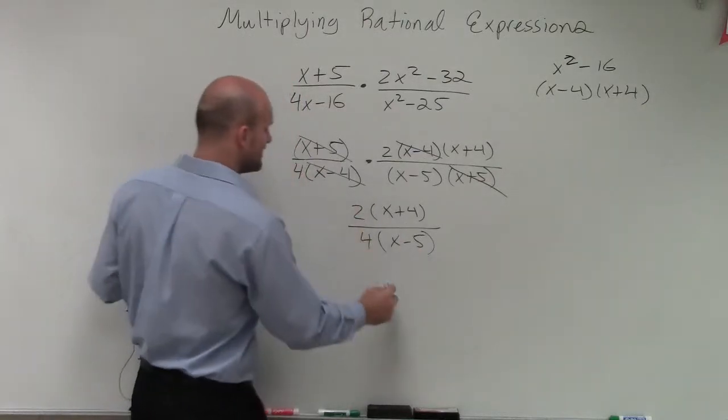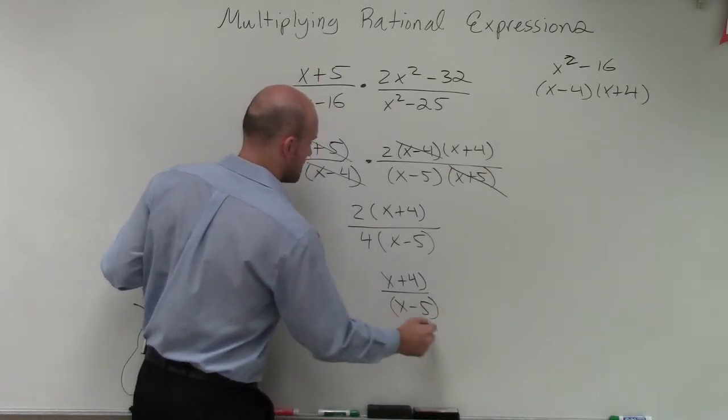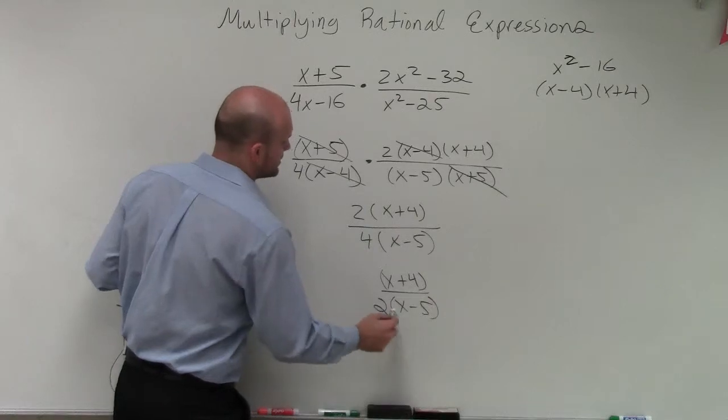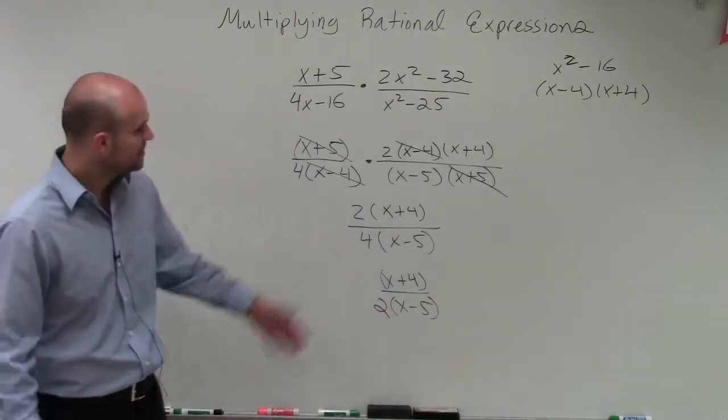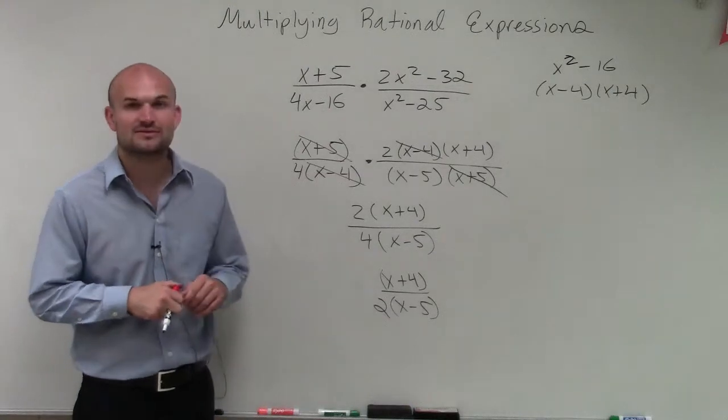Then I can simplify this as x plus 4 divided by 2 times x minus 5. And 2 fourths divides into 1 half. Well, I don't need to write the 1. I can just write the 2 on the bottom. So there you go, ladies and gentlemen. That is how you multiply your rational expressions. Thanks.